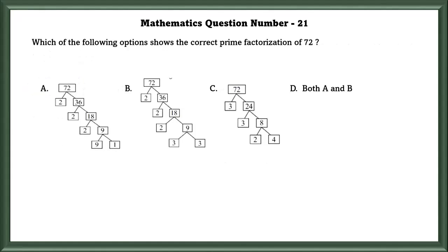Mathematics question number 21. Which of the following options shows the correct prime factorization of 72? In prime factorization, the end numbers should be prime factors. Option A is wrong because 1 is neither prime nor composite, and 9 is not a prime number.